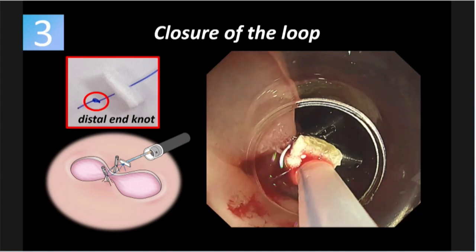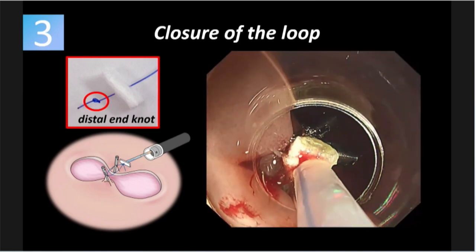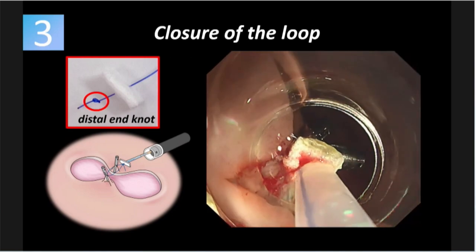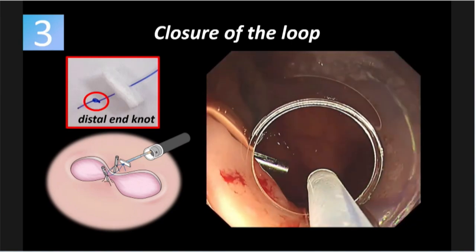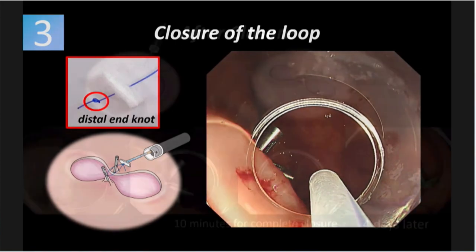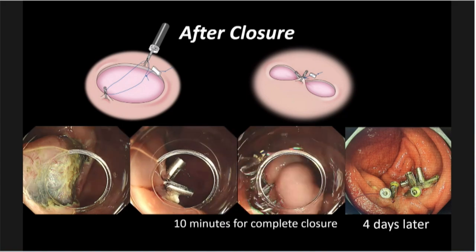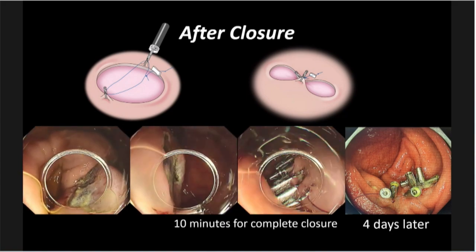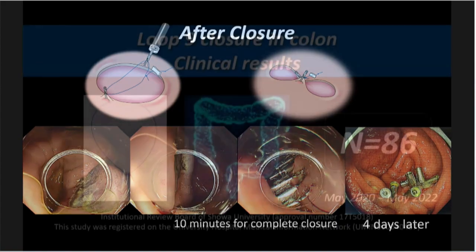At this moment, push the sliding knot. The procedure itself is very simple — pull back the tail knot toward myself, achieving tight closure. After that, we can release the loop nine. It's like an interrupted suture, one by one. Once the major part has been approximated, additional clip fixation is easy for everybody.